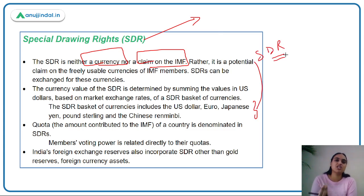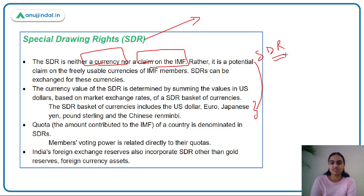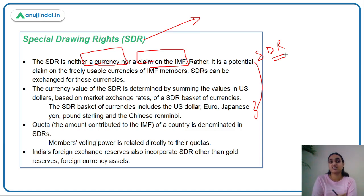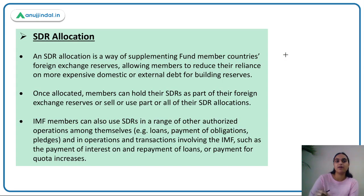The SDR is like the subscription amount paid to IMF when registering as a member — you need to pay a subscription fee in the form of foreign currency or SDRs. Your quota with IMF is also determined in terms of SDRs. The more SDRs you have, the more quota you have with IMF, and the more voting power you have. Just like gold and foreign currencies are part of our forex reserves, SDRs are also part of our forex reserves.